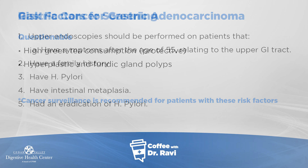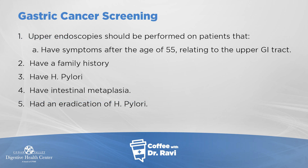So what can we do? Performing an upper endoscopy or camera test on a select group of patients is important. These are people who have symptoms after the age of 55, a family history of gastric cancer, known H. pylori infection, or known intestinal metaplasia of the stomach. All of these are good indications for going down.